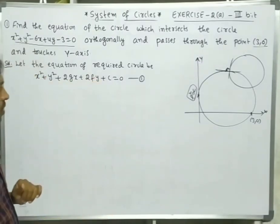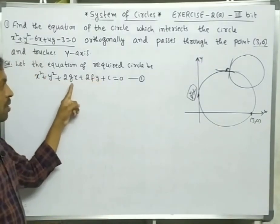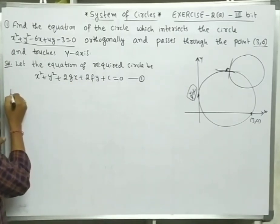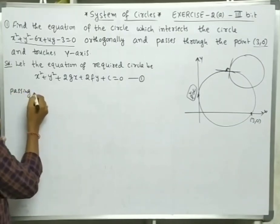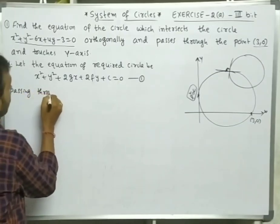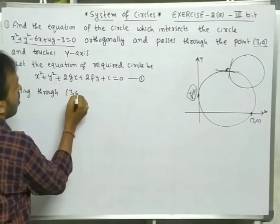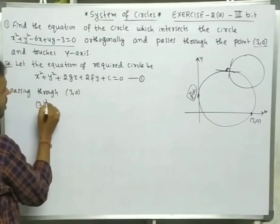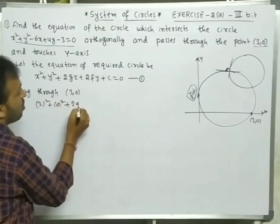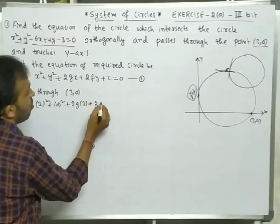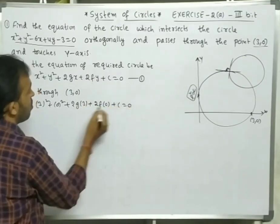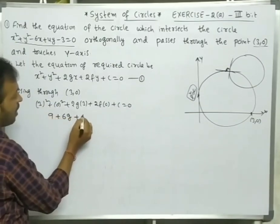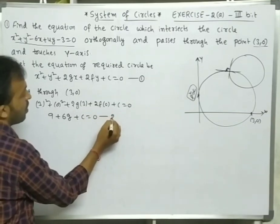The required circle is x² + y² + 2gx + 2fy + c = 0. As this is passing through (3, 0), it satisfies the equation. Therefore: 3² + 0² + 2g(3) + 2f(0) + c = 0, giving us 9 + 6g + c = 0 — equation number 2.